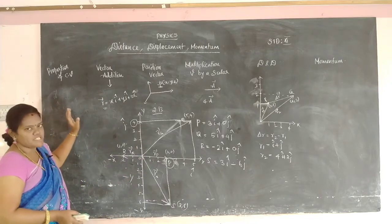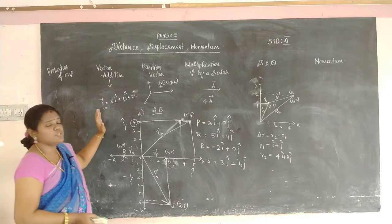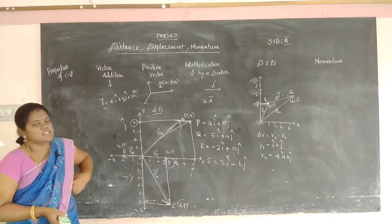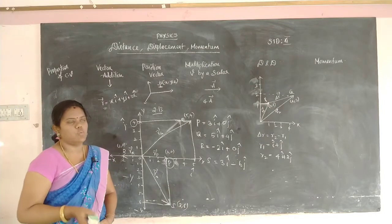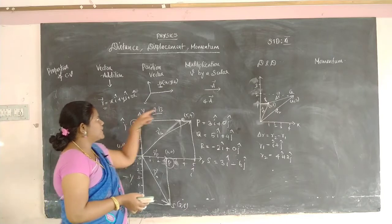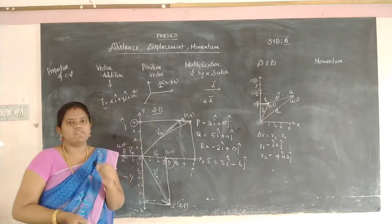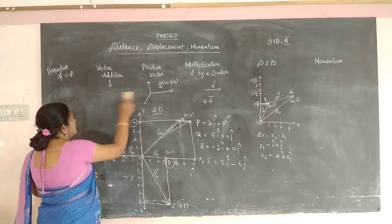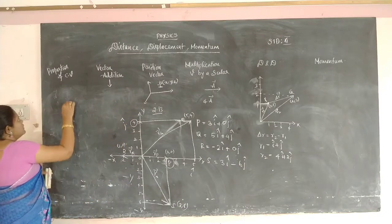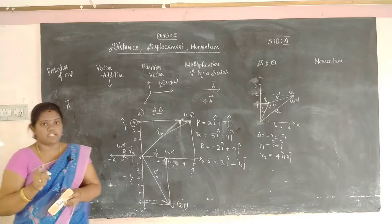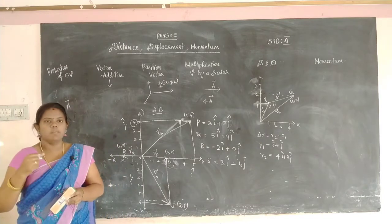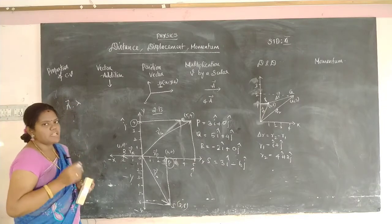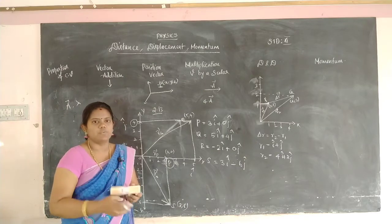Now I explain multiplication of a vector by a scalar. Consider one vector A. You have to multiply it by a scalar, denoted as lambda. Multiplying one vector by a scalar will definitely give a vector. If the scalar is positive, the vector is positive. If the scalar is negative, the vector is in the opposite direction.